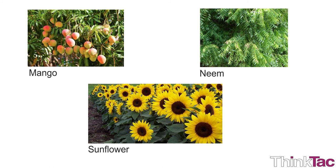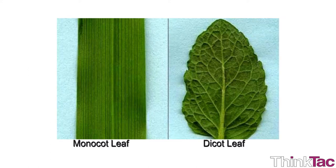Although there are many other differences between these two types of plants, leaf venation is the easiest to look at. Therefore, studying the pattern of veins of a leaf will tell you about the type of plant it belongs to. This information is necessary for detailed studies of plants.